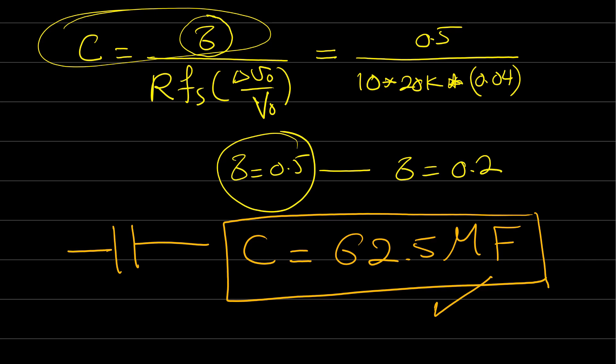So we have designed the boost converter: a 320 μH inductor ensures the inductor current ripple never exceeds 20%, and a 62.5 μF capacitor ensures the output voltage ripple never exceeds 4%. Tell me if you find the same values, or if you have any other thoughts. I hope you enjoyed this lecture, and see you next time.